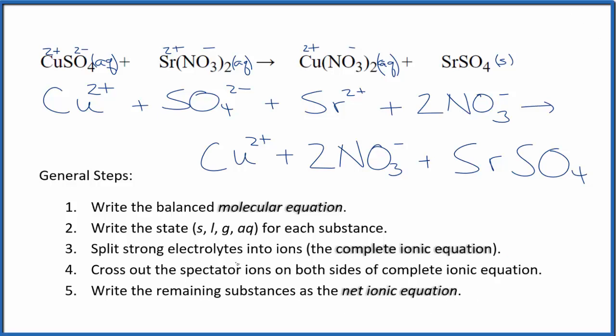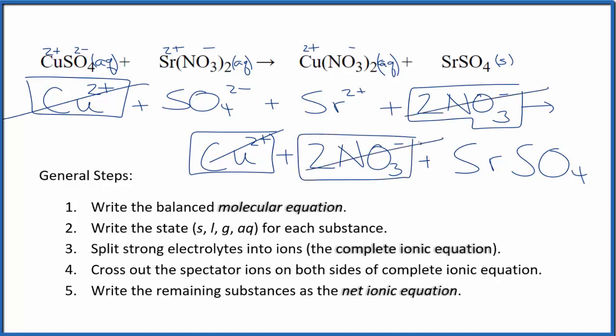Now, to get to the net ionic equation, we need to cross out the spectator ions. In the reactants, we have this copper(II) ion. We also have it here in the products. That's a spectator ion—we're going to cross that out. And then we have 2 nitrate ions here, and we have those in the products. Spectator ions, we cross them out.